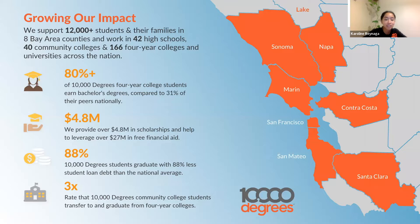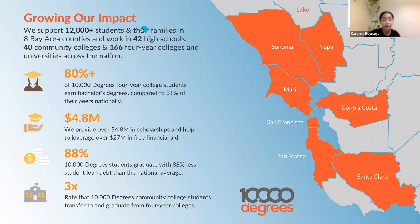10,000 Degrees serves many Bay Area counties. As you can see on your right-hand side, we have Sonoma, Napa, Marin, Contra Costa, and so much more. On the left side, you can see some facts about our program. We support about 12,000 or more students and their families in eight Bay Area counties and work in 42 high schools, 40 community colleges, and 166 four-year colleges and universities across the nation.